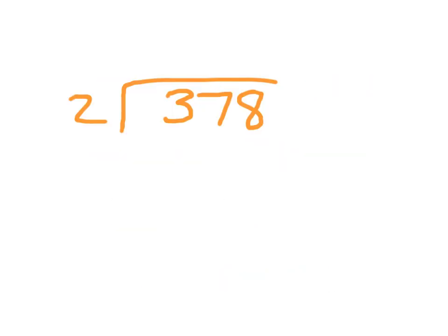When we have this problem here, this is 378 divided by 2. We place our digit here because we can divide 300s by 2. It goes in one time. 1 times 2 is 2. 3 minus 2 is 1.